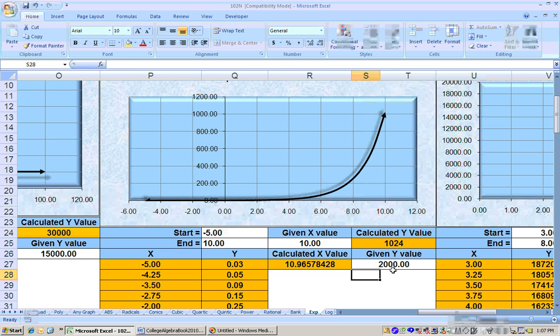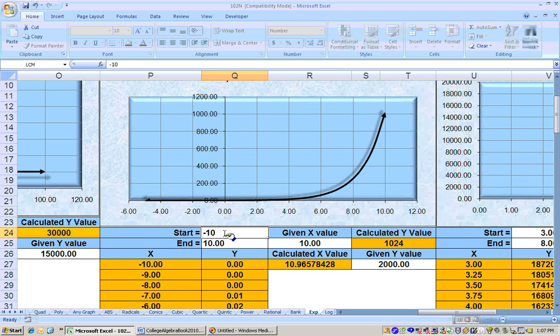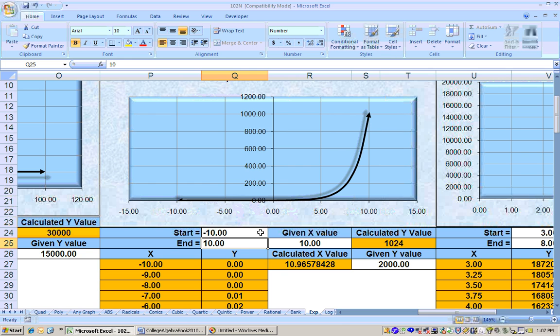When would we be at 2,048, or when would we be at 2,000? Well, at 10.96. So you can put in a y to get an x here. And you can start and end your graph right here. If I want to see it from negative 10 to 10, well, that's what that graph really looks like right there. And you can see that it's getting closer and closer to 0 on that.